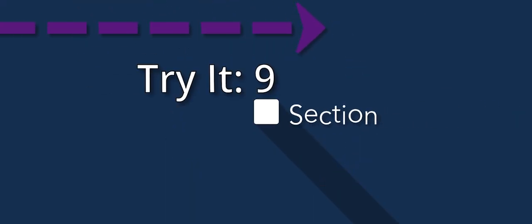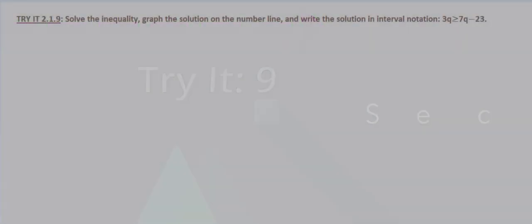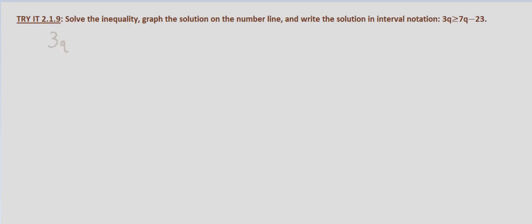We're continuing our solving of inequalities and graphing the solutions on a number line and writing the solutions in interval notation. We are given 3q is greater than or equal to 7q minus 23.